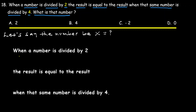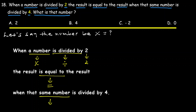The number — we call it x. 'Is divided by' translates to a division operation. 'The result is equal to' translates to an equals sign. Then 'the same number' is again x, and 'is divided by' is again a division operation.